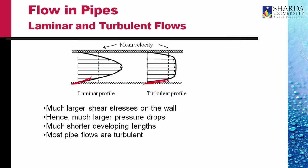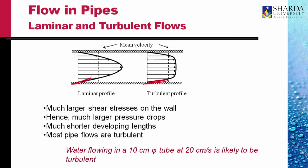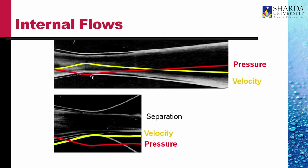Most pipe flows are turbulent. In fact, we will later learn that the pumping cost when the flow is turbulent is most economical. Water flowing in a 10 centimeter diameter tube at 20 centimeters per second is likely to be turbulent. Most flows in pipes are turbulent.